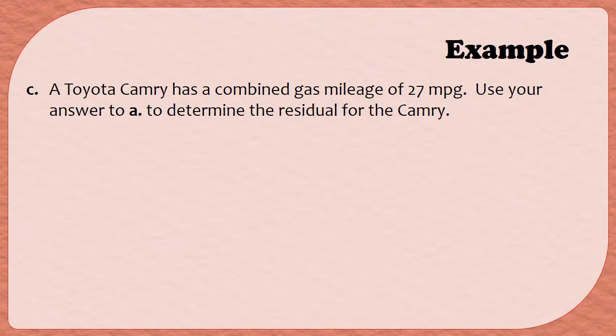In this example, we're told that a Toyota Camry has a combined gas mileage of 27 miles per gallon. Use your answer to Part A to determine the residual for the Camry. We completed Part A in a previous video and found, using a least squares regression line, that the Camry had a predicted 27.093 miles per gallon.